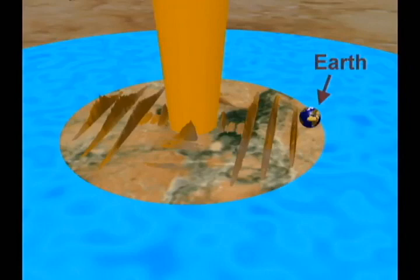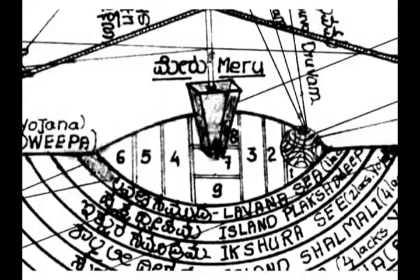This is a common understanding in India, and it is illustrated by this 19th century South Indian diagram, where the earth globe is identified with Bharata Varsha.